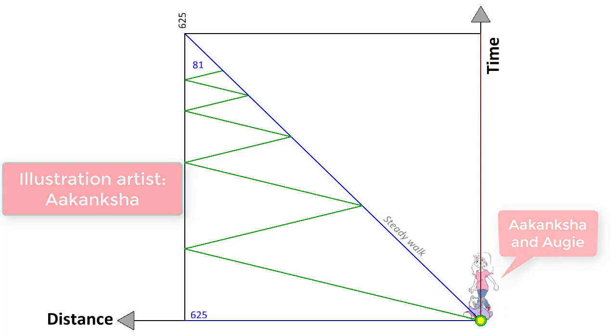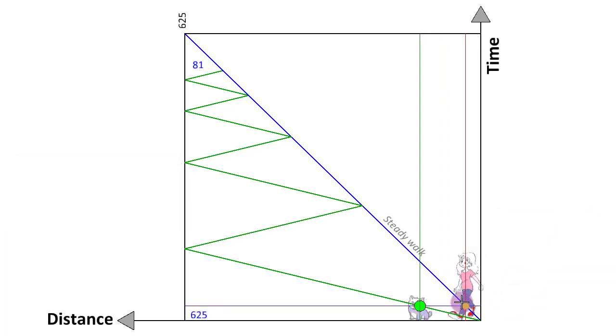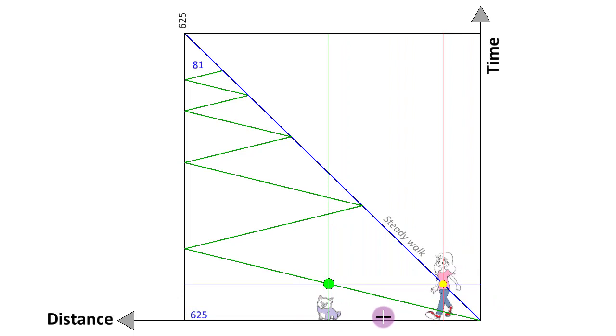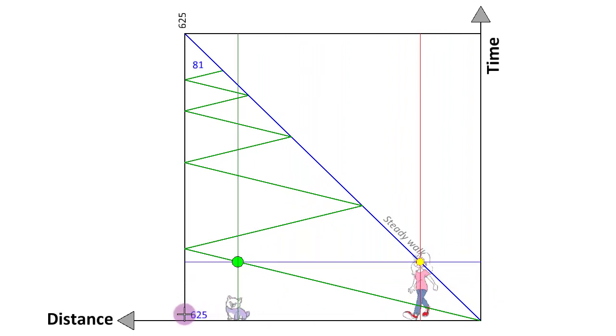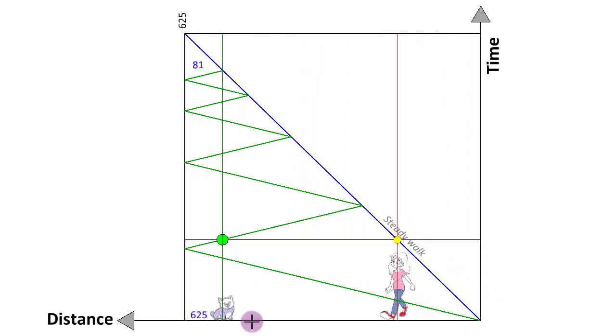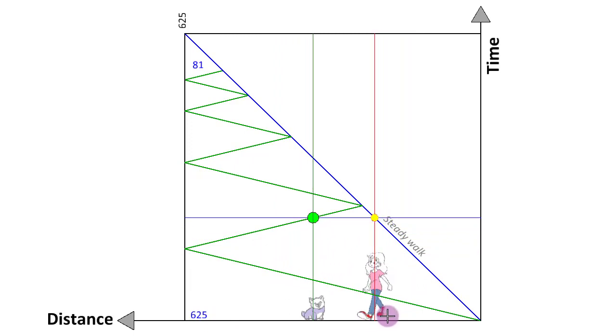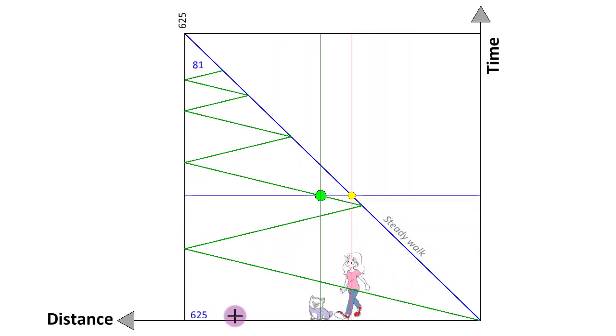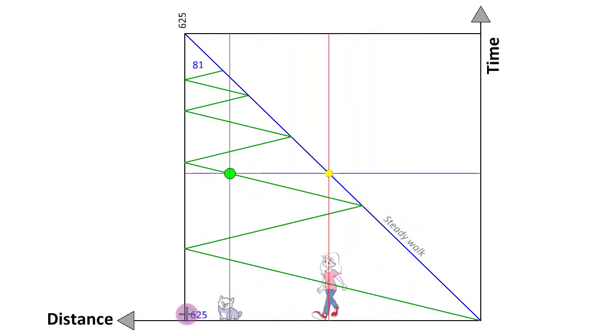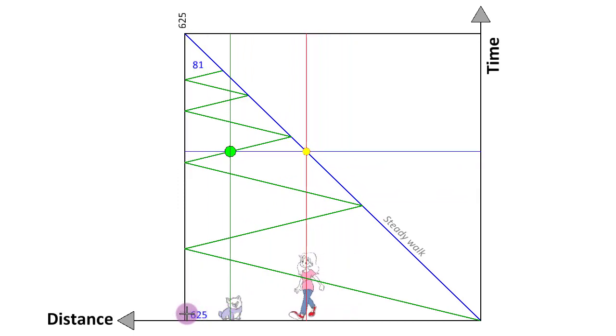So here they are leaving home. Akanksha is walking at a steady pace while Augie rushes to the destination, reaches there, hurries back, meets her momentarily, and again scurries back to their destination. He is going to do that four times in all.